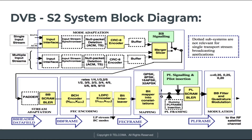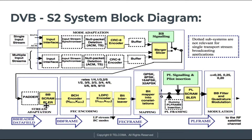This block diagram shows the DVB-S2 system. Two types of inputs are used: single input stream and multiple input stream. The single input stream goes to the input interface. This complete system is known as mode adaptation, which consists of the input interface, input stream synchronizer, null packet deletion, CRC encoder, buffer, merger, slicer, and BB signaling. The data and different ACM commands are transmitted through mode adaptation signaling, which then passes through the network to the stream adaptation system.